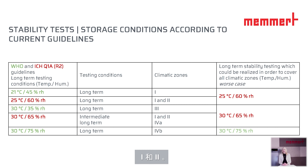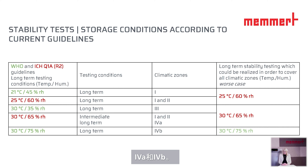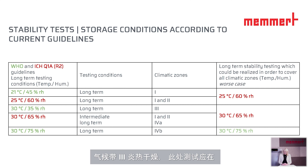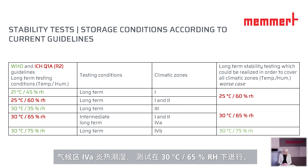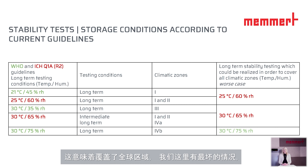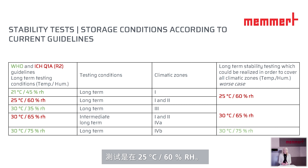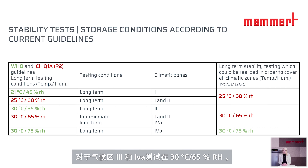The ICH guideline covers climate zones 1 and 2. On the chart, we can see the different climate zones available on the globe. WHO also refers to climate zone 3 and 4A and 4B. Climate zone 3 is hot and dry, and testing shall be done at 30°C and 35% RH. For climate zone 4A, which is hot and humid, testing is at 30°C and 65% RH. For climate zone 4B, long-term testing shall be done at 30°C and 75% RH. For climate zones 1 and 2, testing is at 25°C/60% RH; for zones 3 and 4A, 30°C/65% RH; and for zone 4B, 30°C/75% RH — covering global zones worldwide.